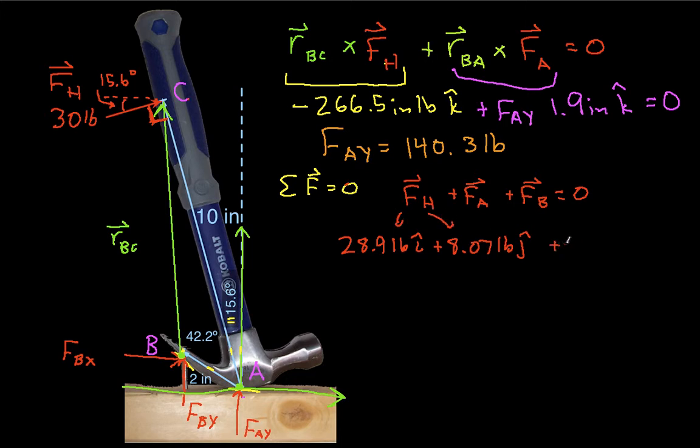FA, we just discovered that FAY is 140.3 pounds, so it's 140.3 pounds with j-hat. It has no X component, and then FB will be FBX i-hat plus FBY j-hat. And this is going to be equal to 0.